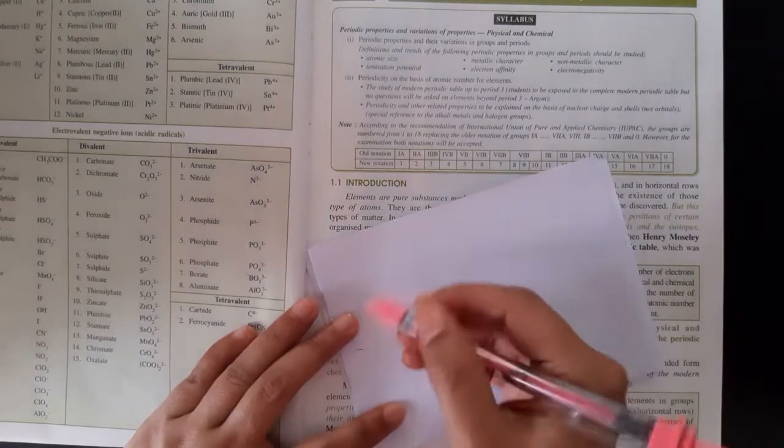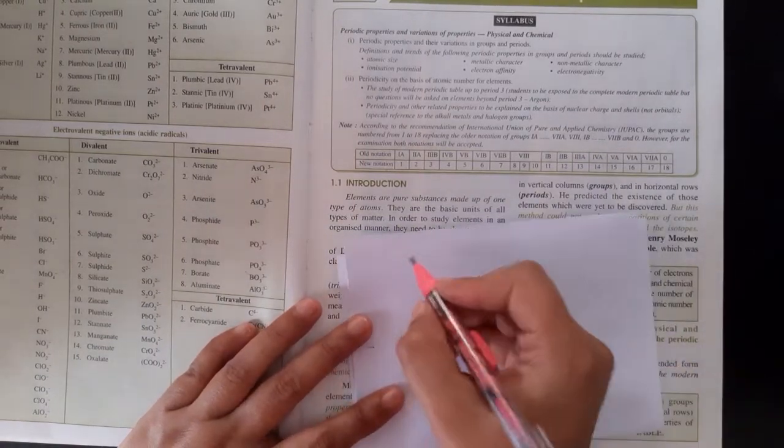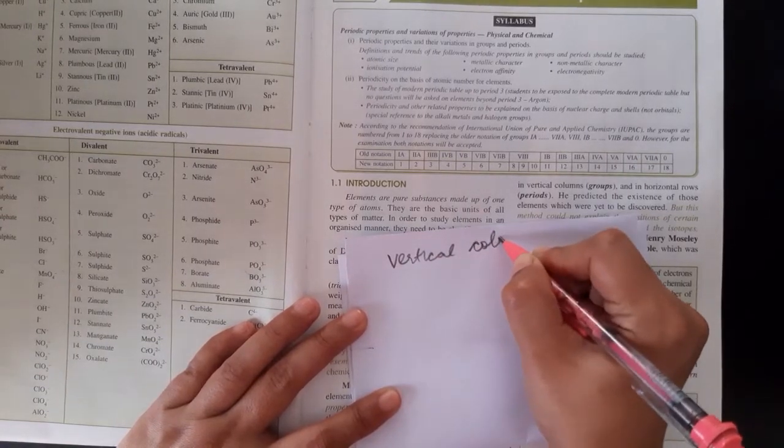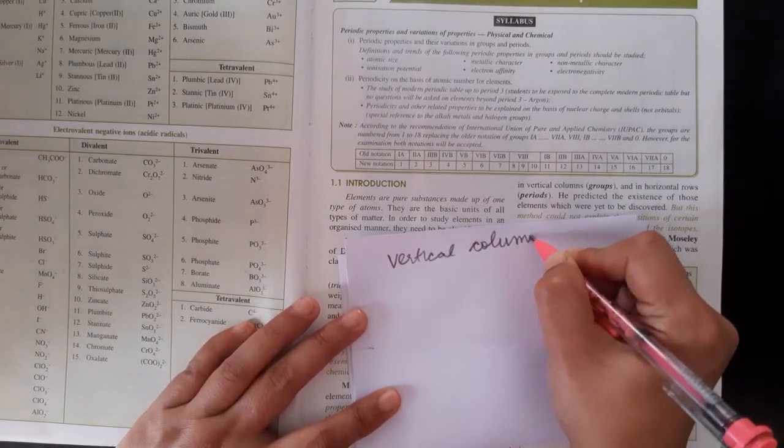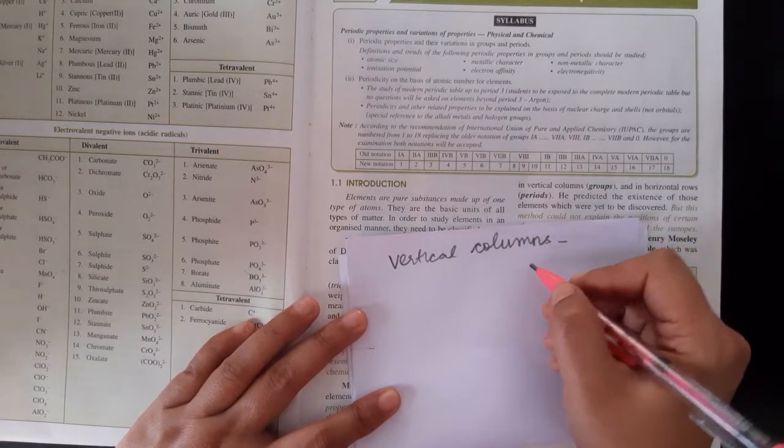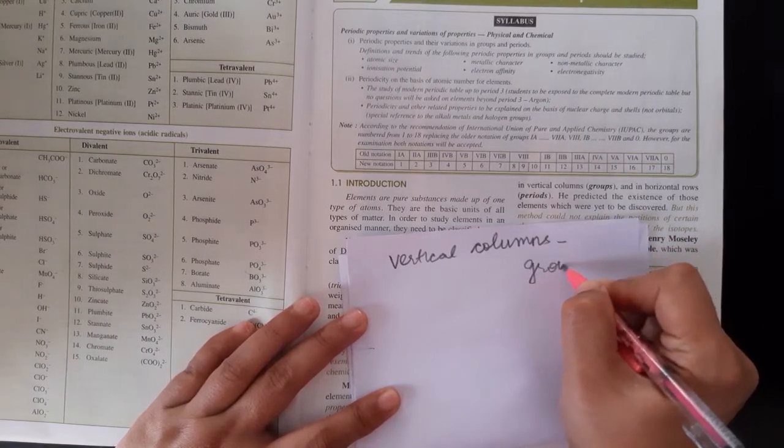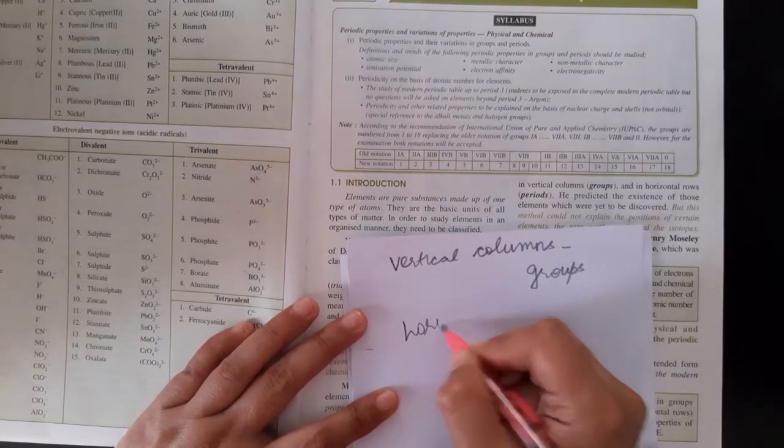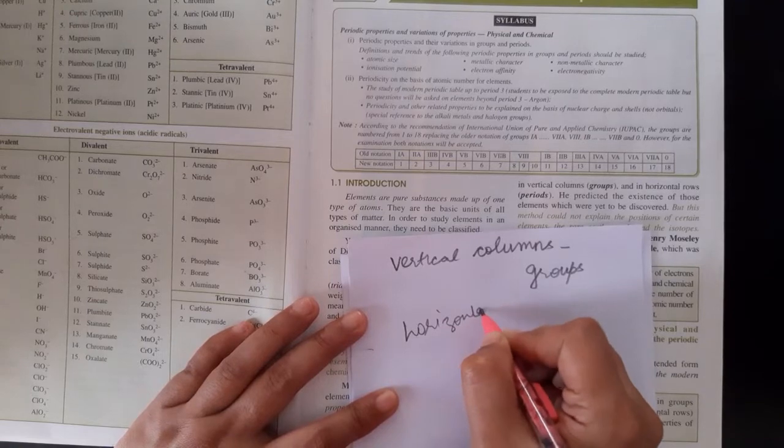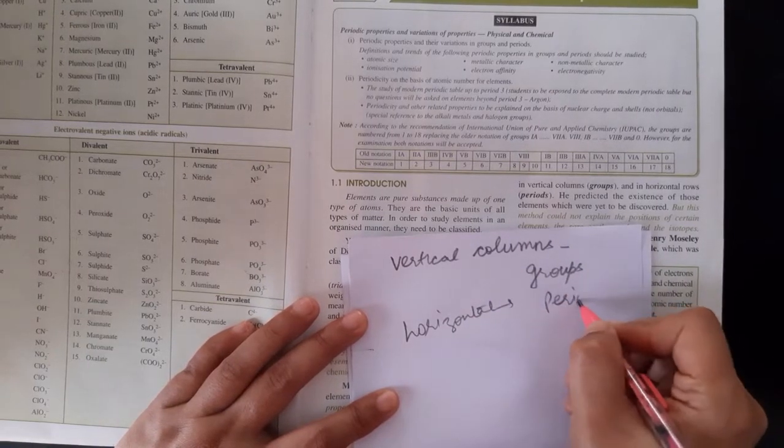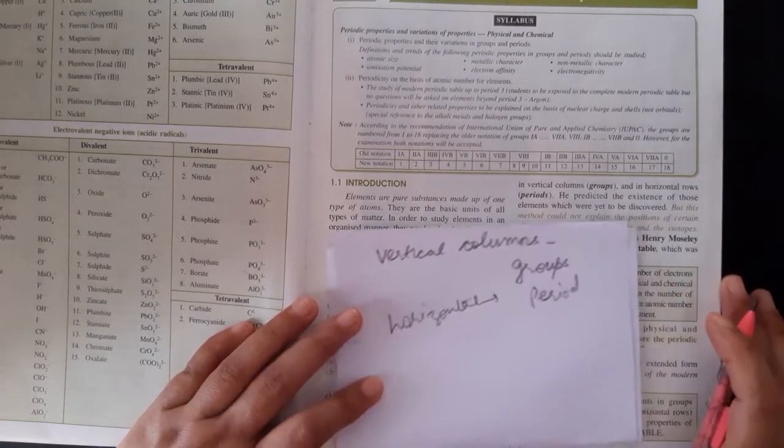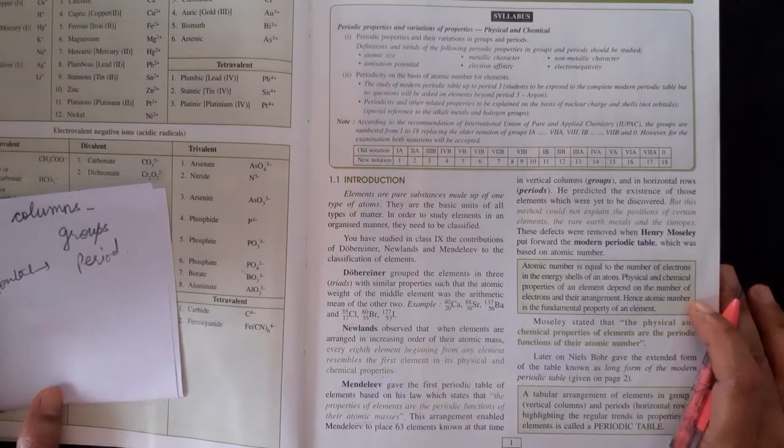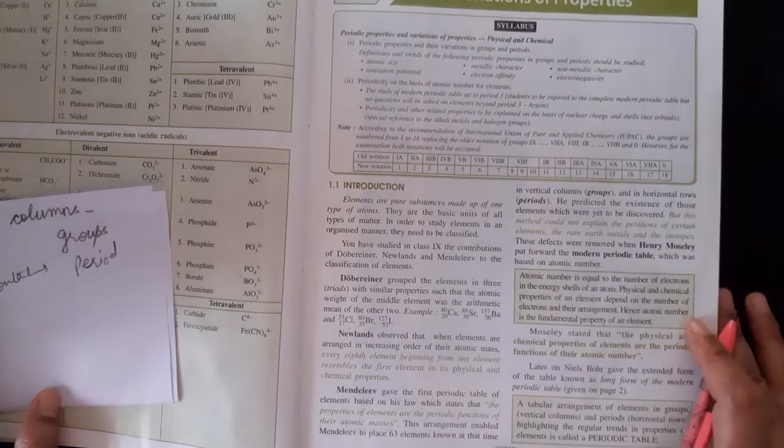There are seven periods, I already discussed. Vertical columns are called groups. And horizontal are called periods. Clear?